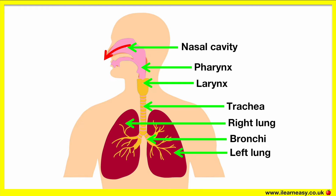The nose is specialised in its functions. It warms, filters and moistens the air before it goes into the lungs. The hair in your nostrils, alongside mucus, traps unwanted particles such as dust and germs which could be harmful to your lungs. So that's how we smell things.